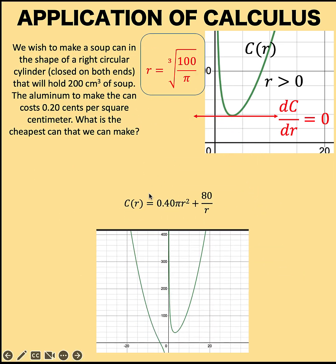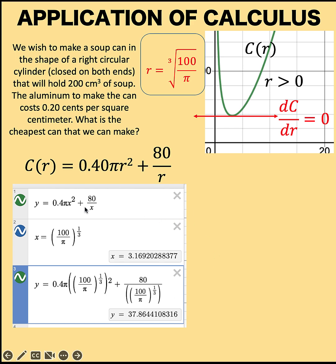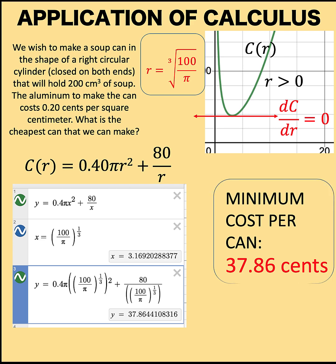Now, let's recall our original cost function. It's 0.40πr² + 80/r. And let's substitute now this value for r to this cost function. Using Desmos graphing calculator, here are now the results. The cube root of 100/π is approximately equal to 3.17. So, the value of the radius that will give us the cheapest can is r equals 3.17 centimeters. Now, plugging in this value for our cost function, that gives us a minimum cost per can of 37.86 cents. And this is now the cost of the cheapest can that we can make given this situation. And therefore, this problem is now solved.